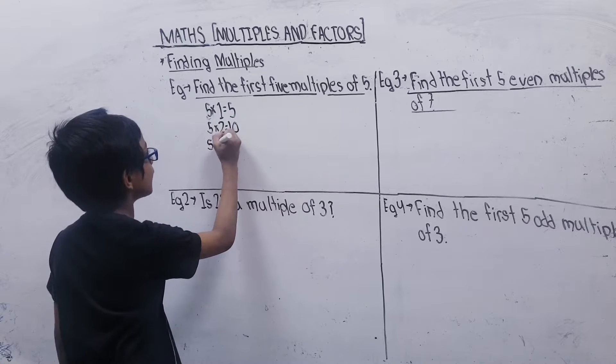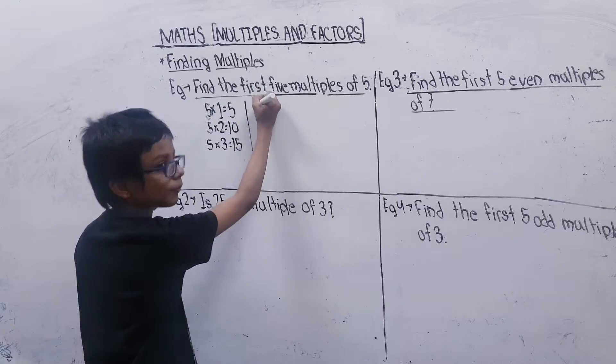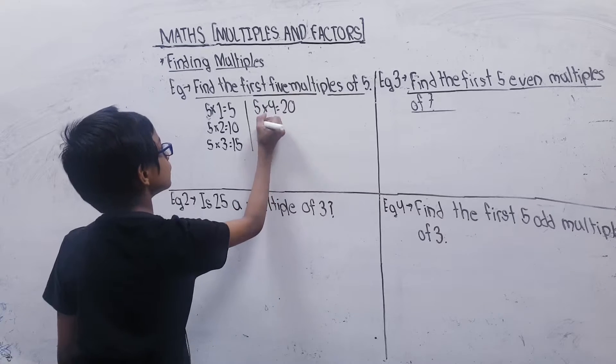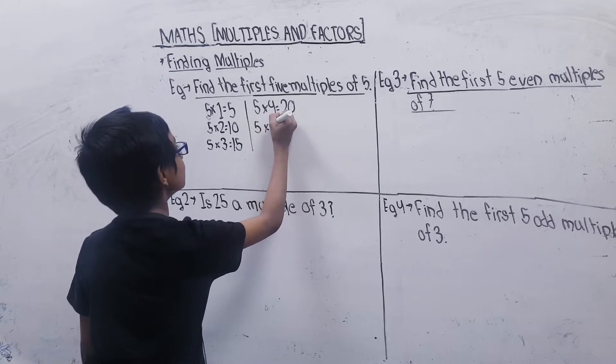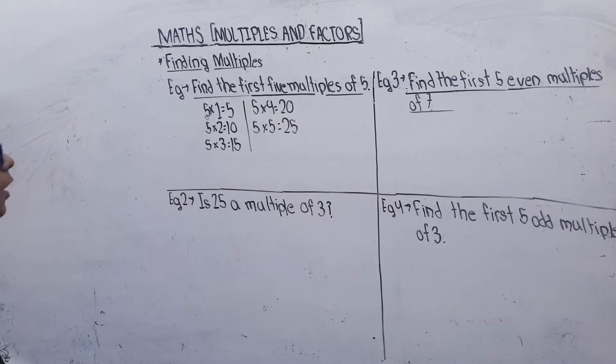5 multiplied by 4 equal to 20, 5 multiplied by 5 equal to 25. So these are the 5 multiples of 5.